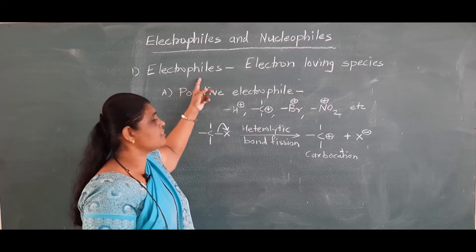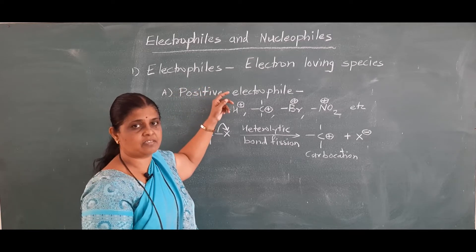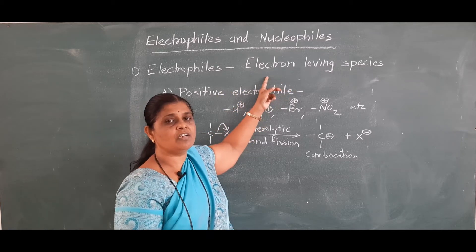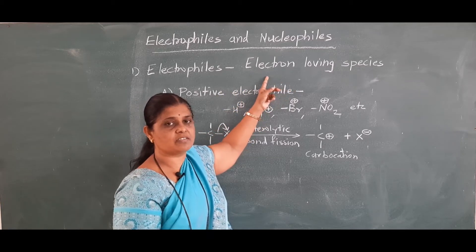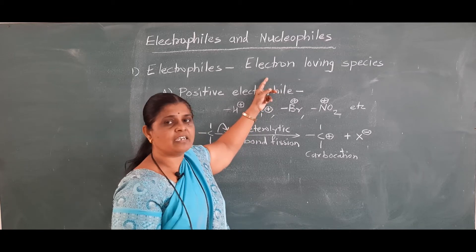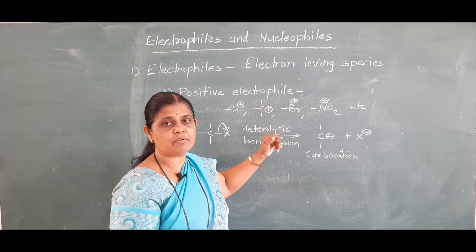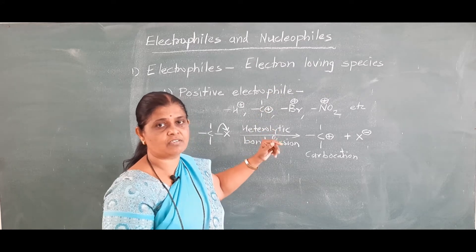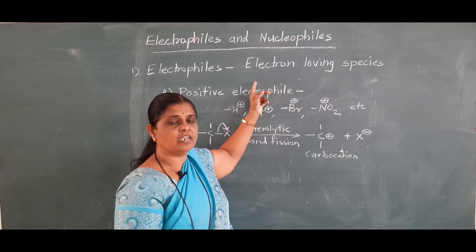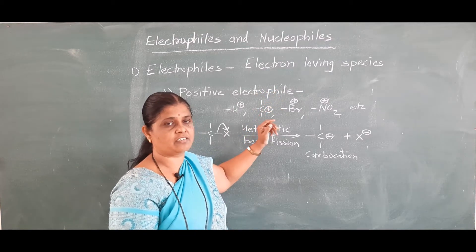Electrophiles are electron deficient species, and they are known as electron loving species because, as they are electron deficient, they have the tendency to accept electrons. During the course of reaction, electrophiles go towards electron rich centers.